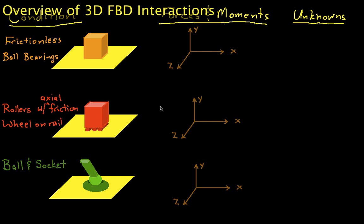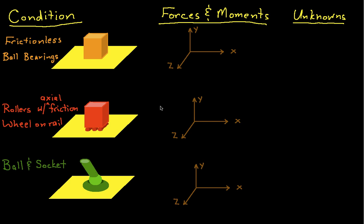Welcome to this video in which we provide an overview of interactions that occur between a free body and its environment, represented in three dimensions. Anytime you're drawing a free body diagram, you need to understand what types of forces and couples the environment can apply to the body. Today we'll look at several different types of forces and moments. This is sort of like a secret code book — once you understand what the different things mean, it's much easier to write down what the free body diagram should be.